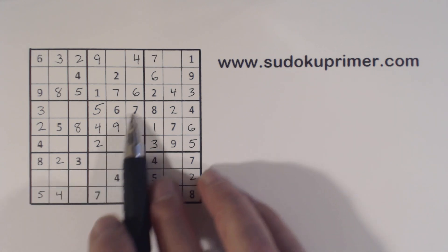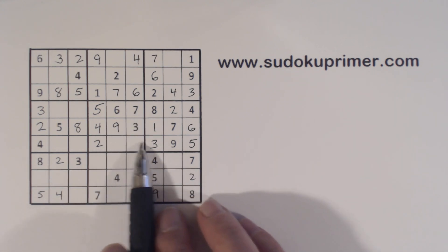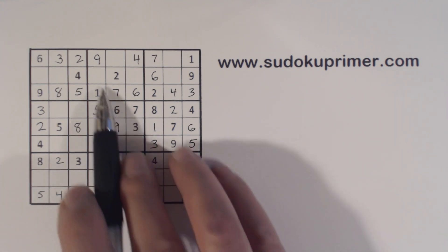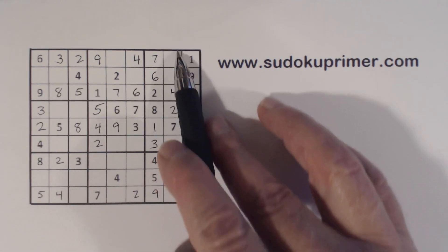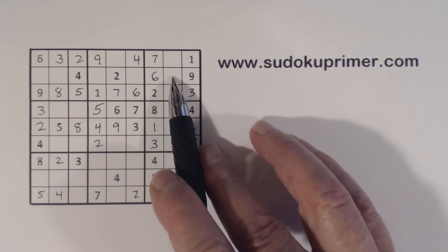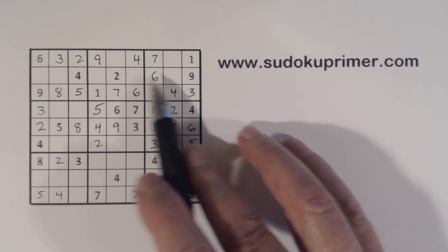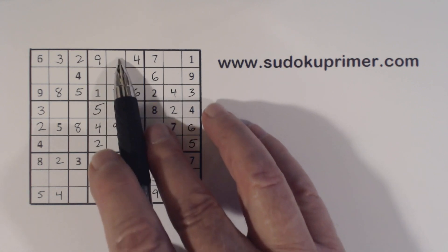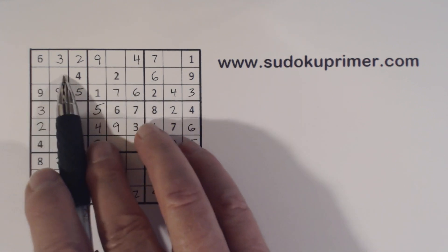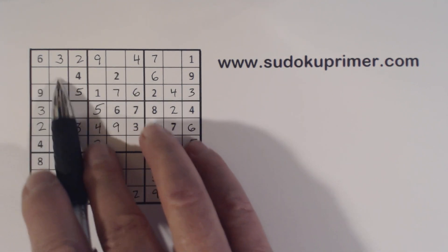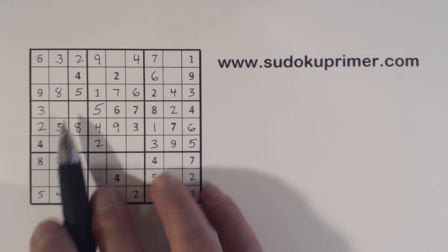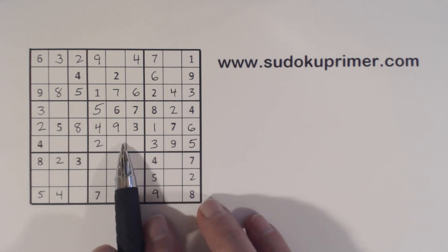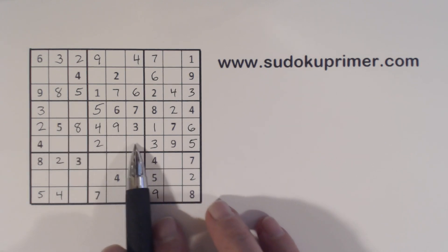So we have: 1, 8 there; 5, 8 twins there; 3, 5, 8 there; 1, 7 there; 1, 9 there; 6, 7 there; 1, 8 there. Let's see what we can do now.